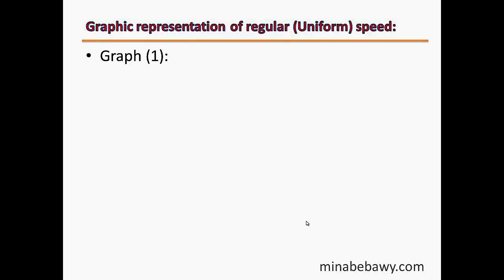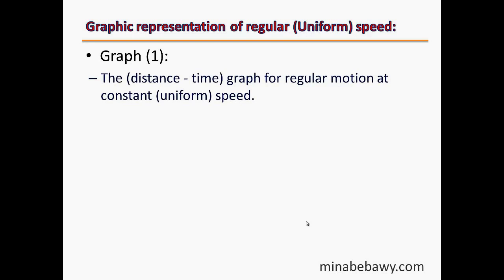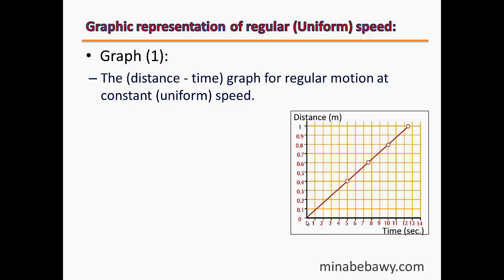We will talk about graphic representation of regular or uniform speed. We have three graphs we have to understand, draw, and even describe. Graph number 1 is called the distance-time graph for regular motion at constant or uniform speed.